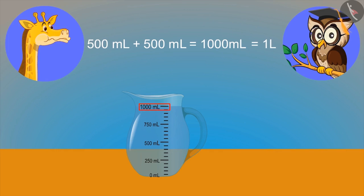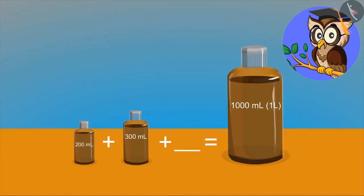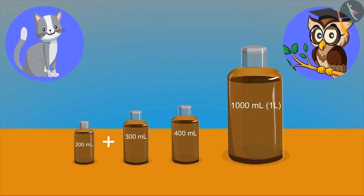Yes, correct. Now see, in one bottle we have 200 ml of oil and in the other, we have 300 ml of oil. Now tell me, to fill a 1,000 ml bottle or 1 liter bottle, how much oil will you need? Is the answer 400 ml?